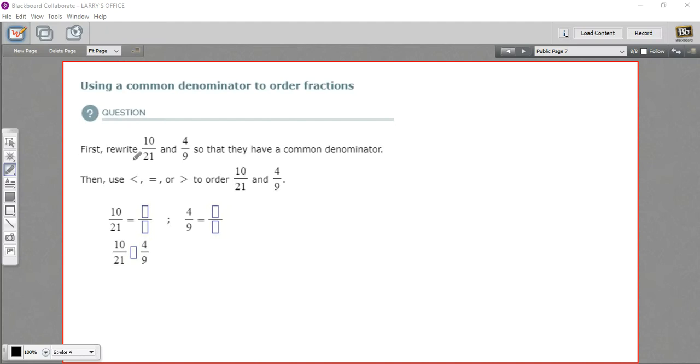In this problem, we have two fractions, 10 over 21 and 4 over 9, and we're supposed to compare them. We're supposed to find out which one is bigger or smaller or whether they're equal.